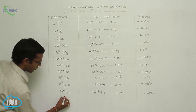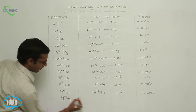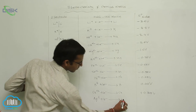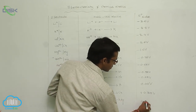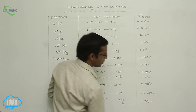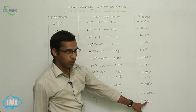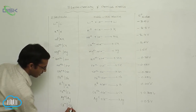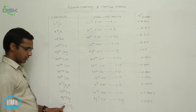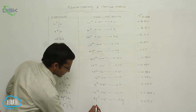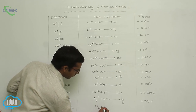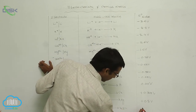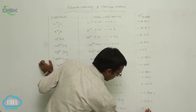Next is silver: Ag⁺ | Ag. Silver gains one electron and is converted to Ag metal. Its E° value is +0.8 V. So copper is +0.34 V and silver is +0.8 V — the values continue to increase. Next is chlorine: Cl₂ gains two electrons and is converted to 2Cl⁻. Its E° value is +1.36 V.